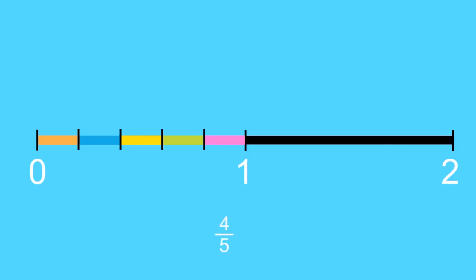Now, counting from 0, we have 0, 1 fifth, 2 fifths, 3 fifths, 4 fifths. Here's the location of 4 fifths on our number line.